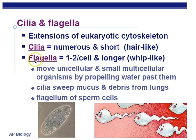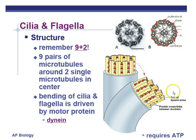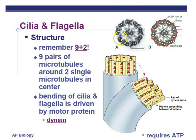Cilia and flagella are very similar — both involved with movement. However, cilia are short and move like a little paddle, like an oar on a ship, back and forth. Flagella are longer and have a whip-like motion — sperm has a flagellum that moves it through water with a whip-like motion. Cilia and flagella have a nine-plus-two arrangement of microtubules: two central microtubules surrounded by nine pairs. This structure has been conserved throughout time — the cilia in the back of your throat have the exact same nine-plus-two arrangement as cilia in bacteria.